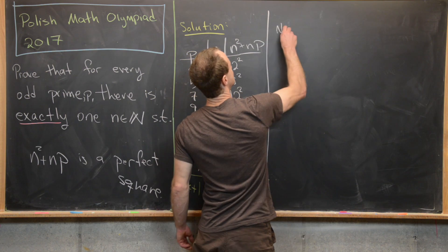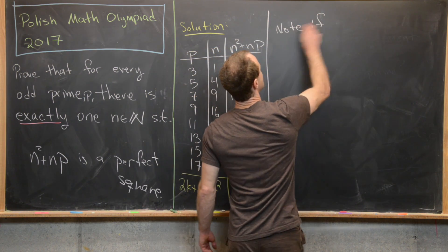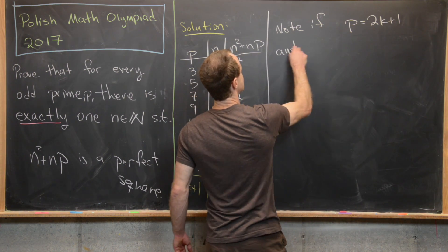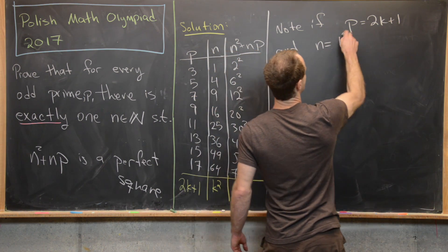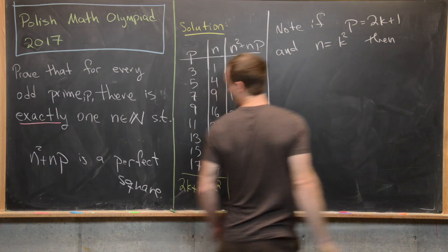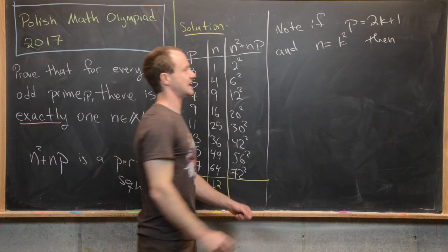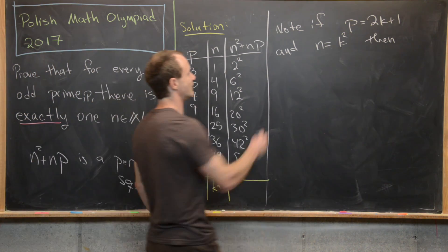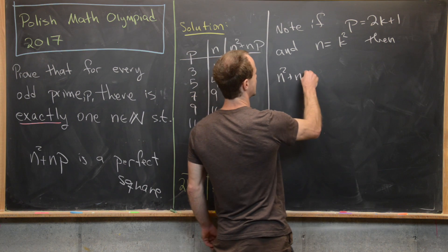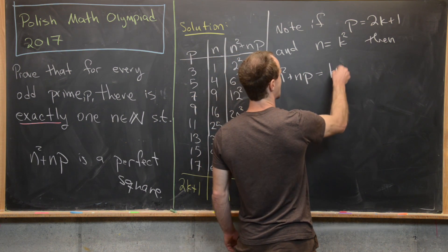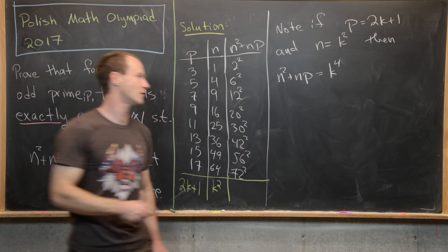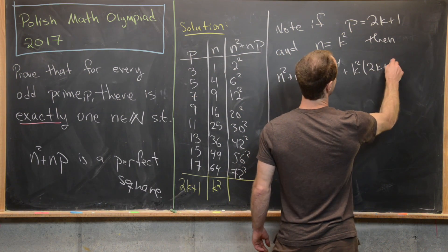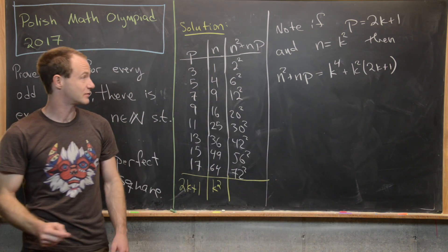So now let's notice that if p equals 2k plus 1 and n equals k squared, then our combination over here, n squared plus np is a perfect square, and we can actually check that pretty easily. So we have n squared plus np, so we can write that as k to the fourth, because k squared squared is k to the fourth, plus k squared times 2k plus 1, again using the fact that p is equal to 2k plus 1.